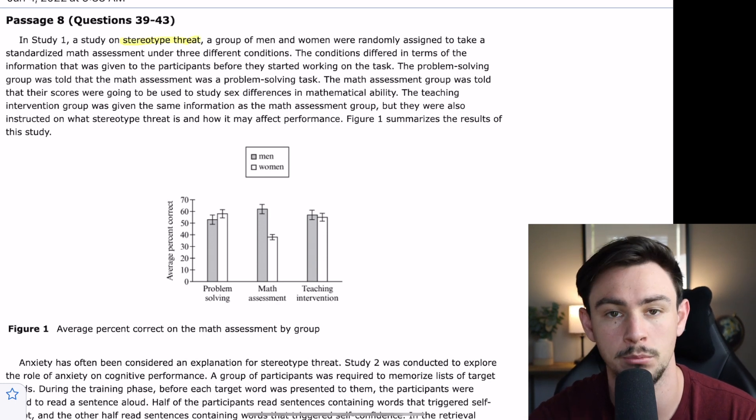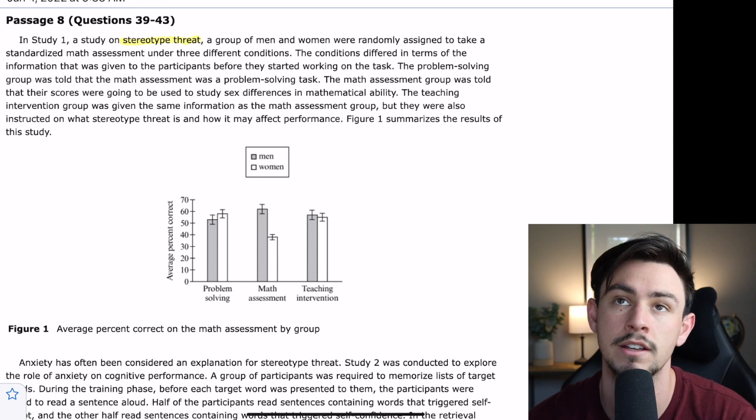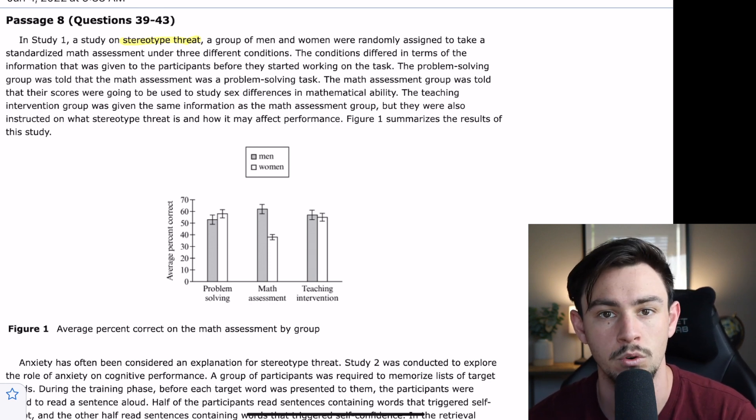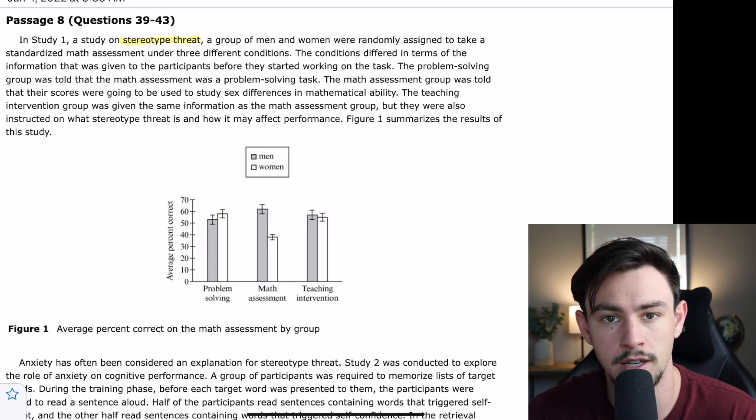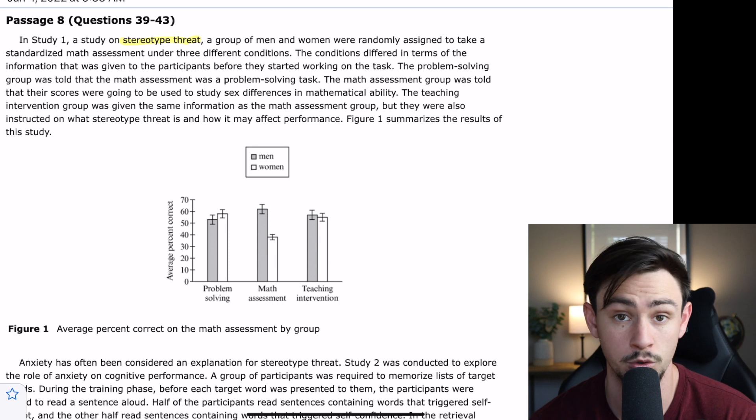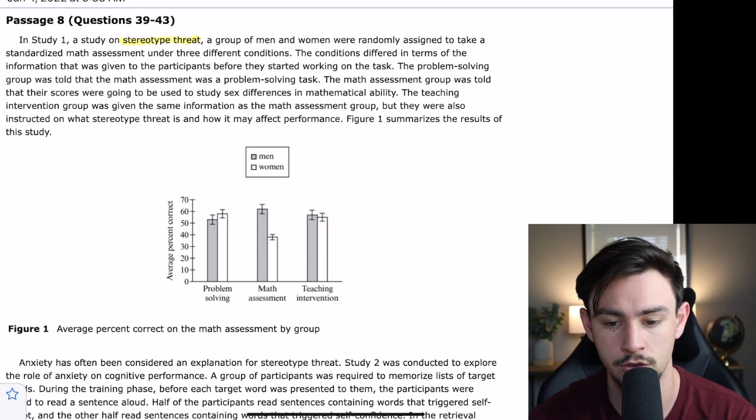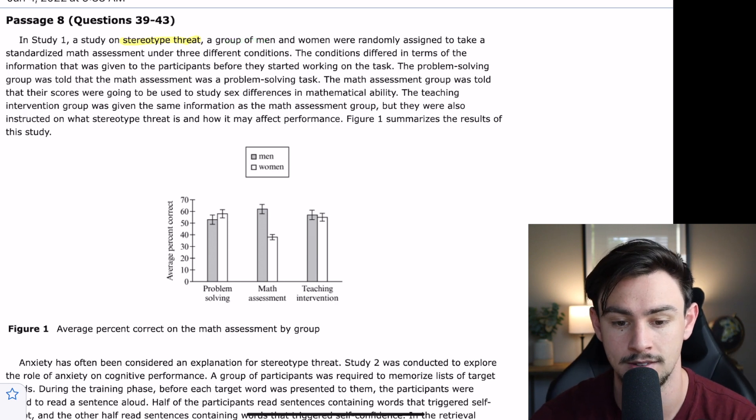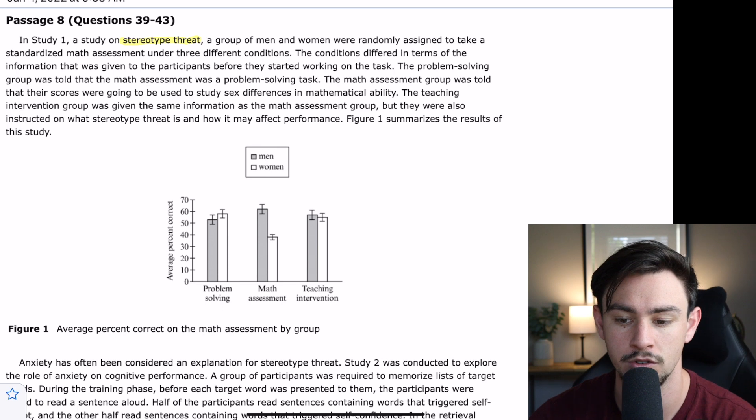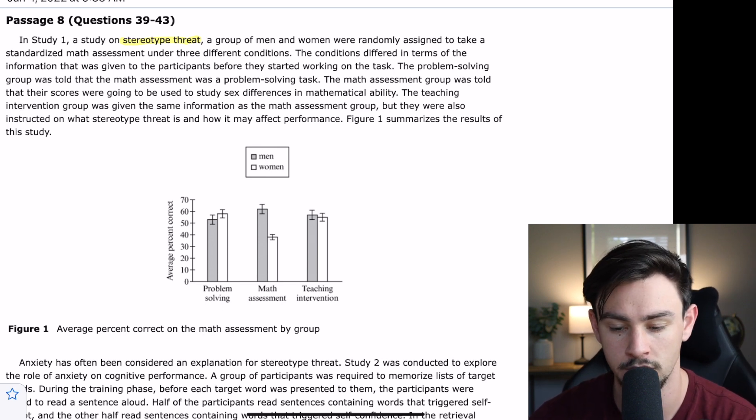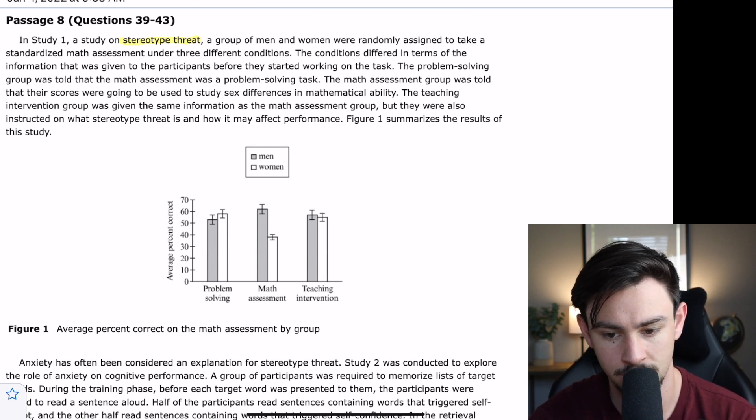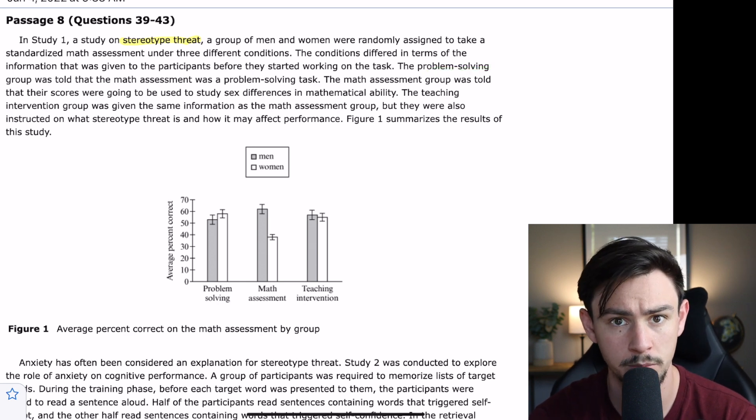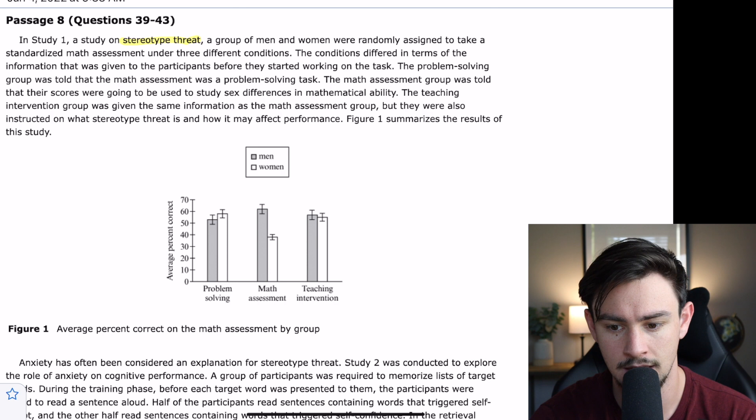We're going to go ahead and highlight that. Remember from your flashcards what stereotype threat is. It's this idea that if you're in a situation where you feel like you are going to negatively perform, you're going to feel some anxiety associated with it. And a lot of times that anxiety is going to make you more likely to perform poorly. So, this study on stereotype threat says, A group of men and women were randomly assigned to take a standardized math exam under three different conditions.